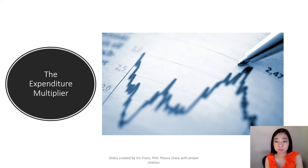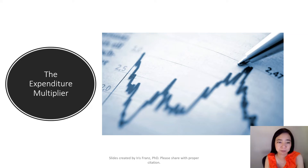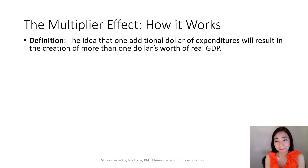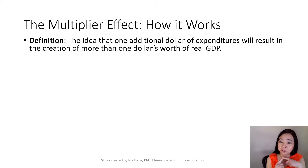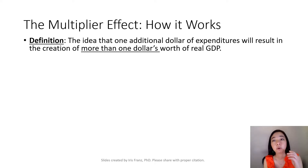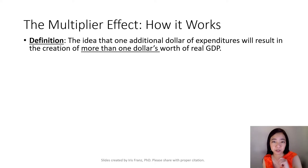Next, we're going to talk about the multiplier effect. So what is a multiplier effect? By definition, the multiplier effect is the idea that one additional dollar of expenditure will result in the creation of more than just $1 worth of real GDP.